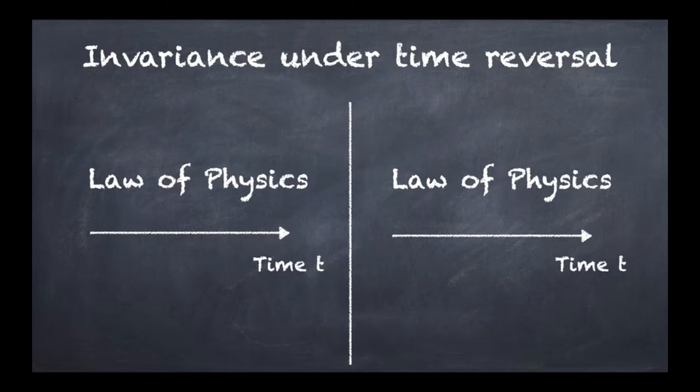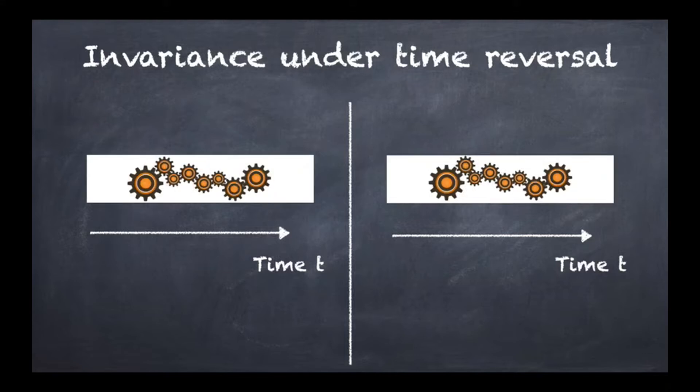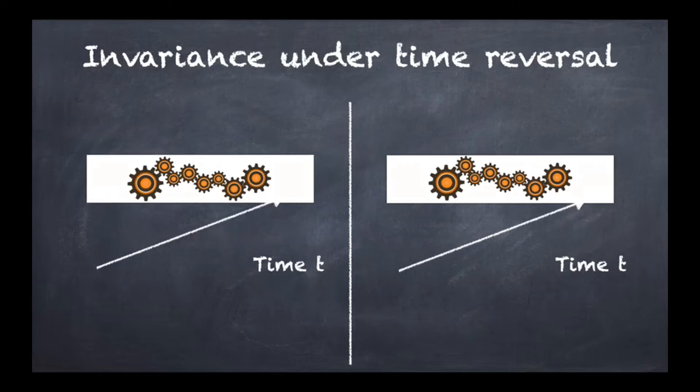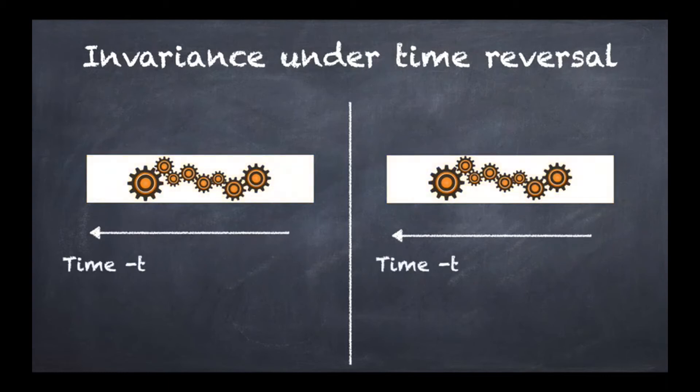When we check for invariance under time reversal, we need to imagine putting this law of physics, often in the form of a mathematical equation, into some kind of machinery. This is usually a conceptual and mathematical machinery, and when it comes to time reversal, this particular machinery is precisely going to invert the time.